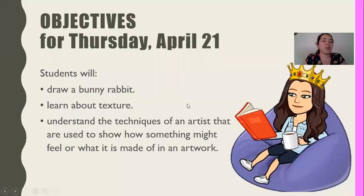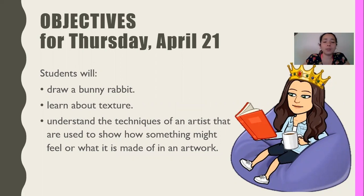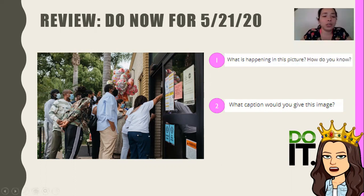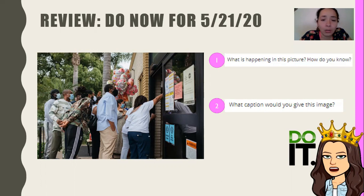We're going to draw a bunny rabbit. We're going to learn about texture and understand the techniques of an artist that are used to show how something might feel or what it is made of in an artwork. Before we go into that, we're going to look at our do now for today. This is the image for today — go ahead and type in what is happening in this picture, how do you know, and what caption would you give this image.